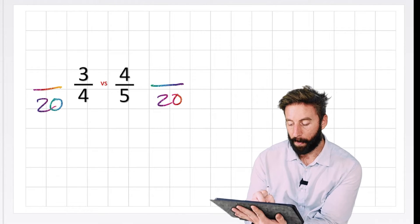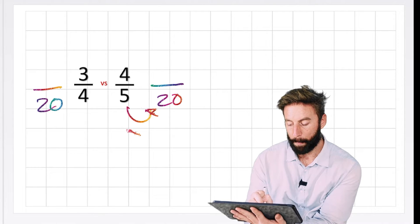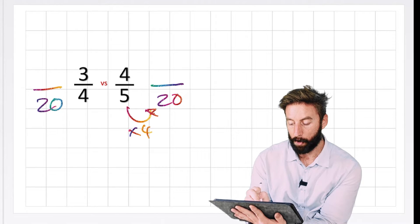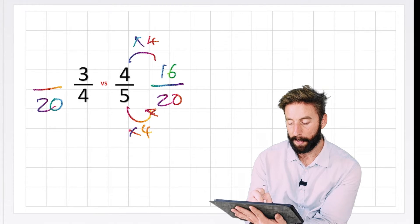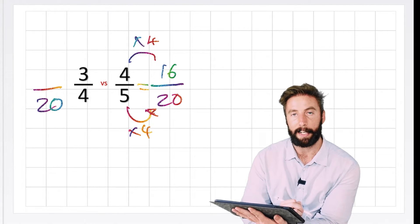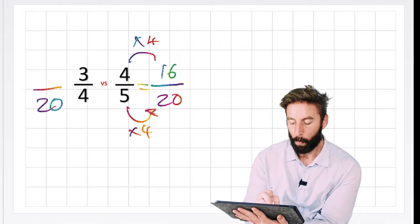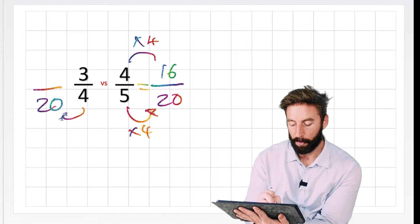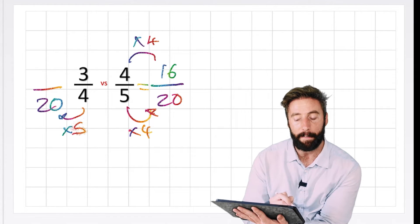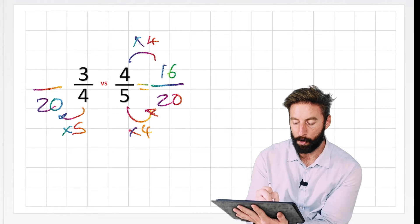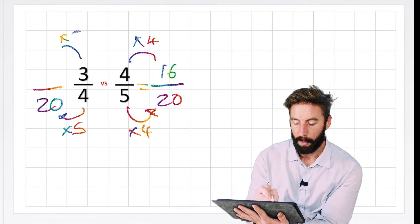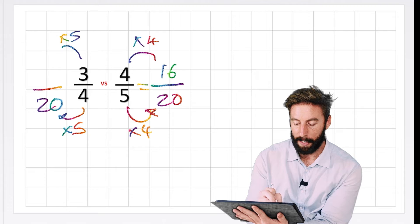Okay? Well, how did I get from 5 to 20? I have to multiply by 4. So therefore, I have to do the same thing to my numerator. So therefore, 4 times 4 is 16. So 4 fifths is equivalent to 16 twentieths. Okay? Well, how did I get from 4 to 20 on this side? I had to multiply by 5. Therefore, I have to multiply my numerator by 5. And 3 times 5 is 15.